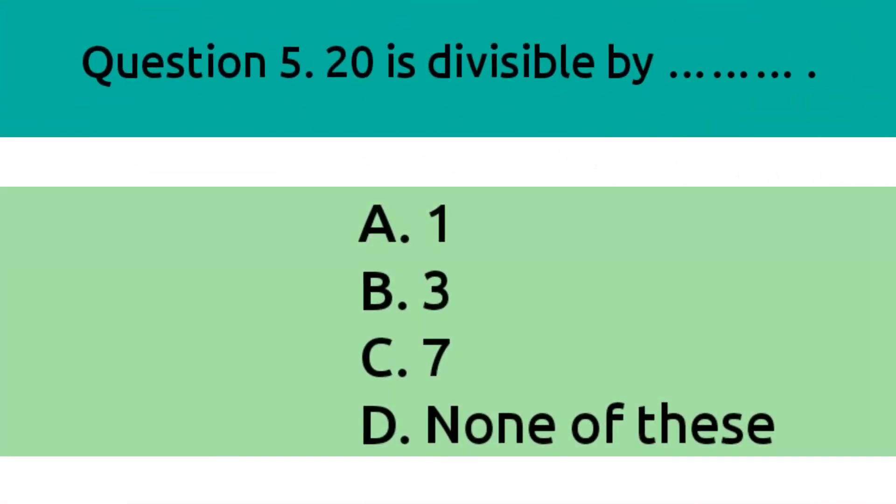Question 5. 20 is divisible by dash. Option A, 1. Option B, 3. Option C, 7. Option D, none of these. And the correct answer is Option A, 1.